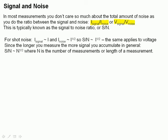If you have a very big signal and very small noise, that's good. But even if you have a lot of noise, if you have a big signal, you can still get very good measurements. This is typically known as the signal to noise ratio, or S/N, or signals and noise.